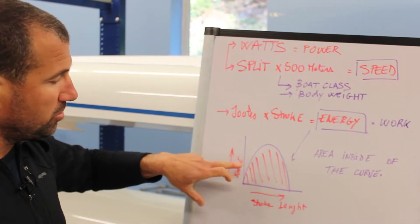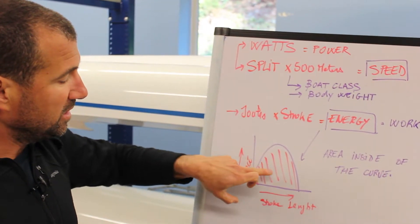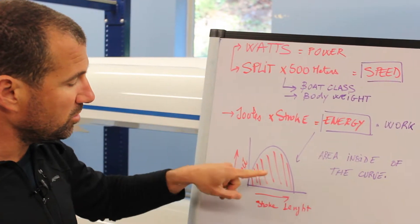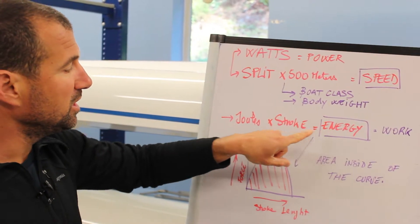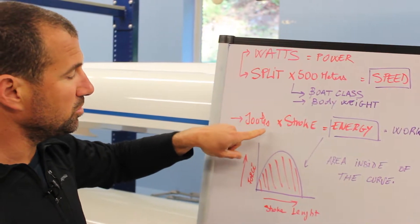So every time we take a stroke, we produce a curve. That curve, that is one stroke, has an area. That area is the amount of work of that stroke energy, that is joules per stroke, so it will give us joules.